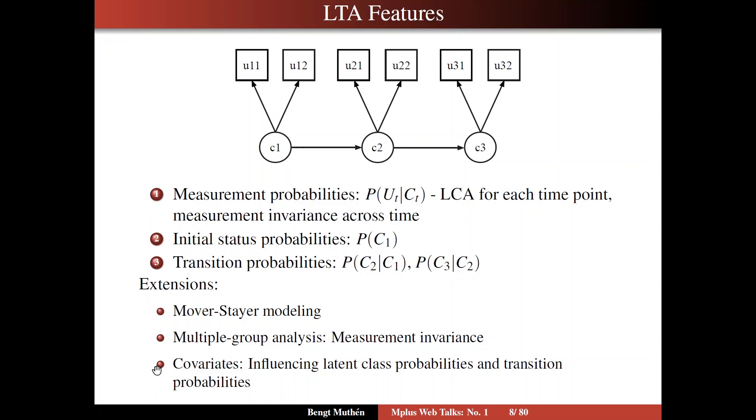Covariates are often brought in, covariates that influence latent class probabilities, as well as transition probabilities. As a matter of fact, you can also let them influence the observed variables, which then gets back to the issue of whether or not you have measurement invariance.